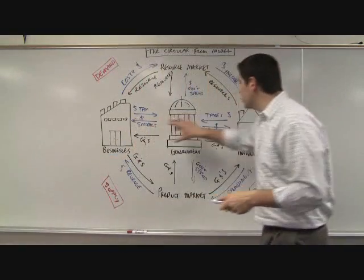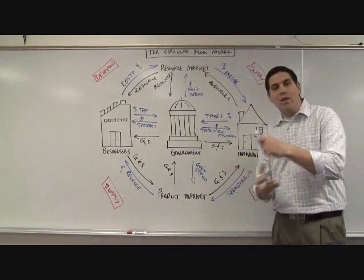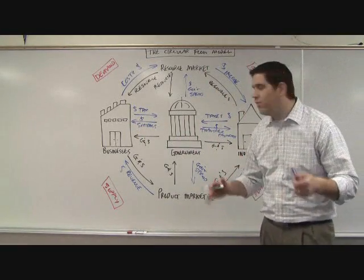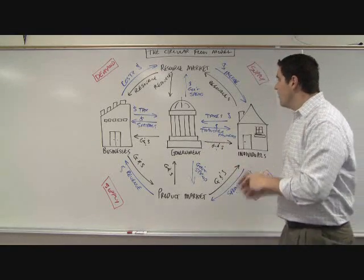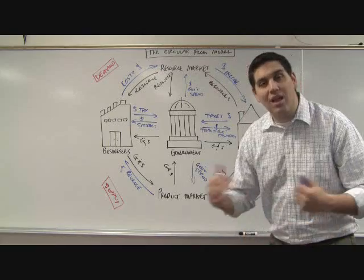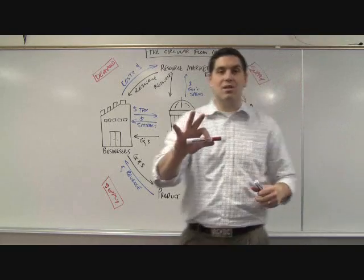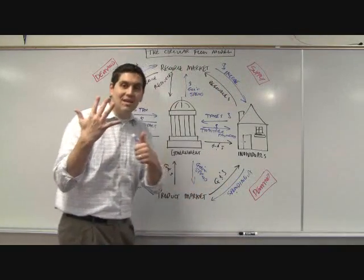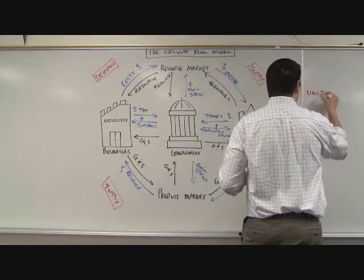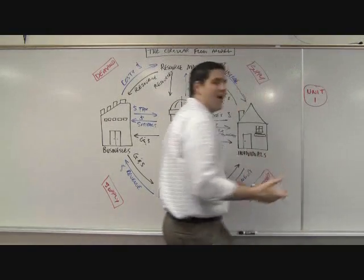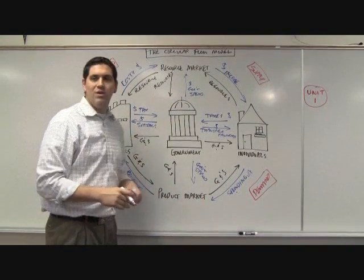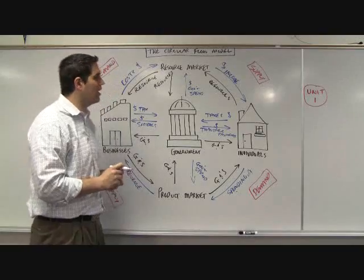The circular flow model tells you how the three entities are all related to each other in the free market system. If you understand it, you understand what microeconomics is all about. There are six different units. Unit one is the basic concepts — scarcity, production possibilities curve — things that are outside the circular flow, just general foundational stuff.